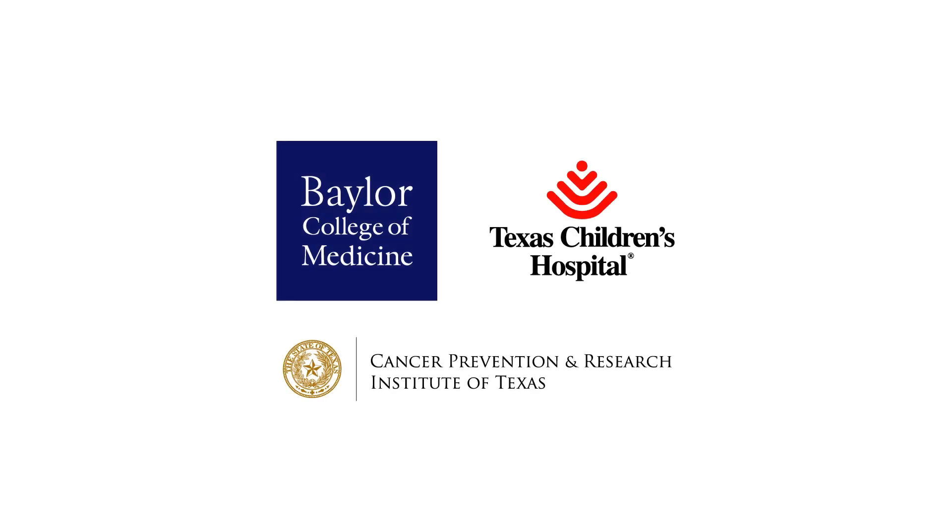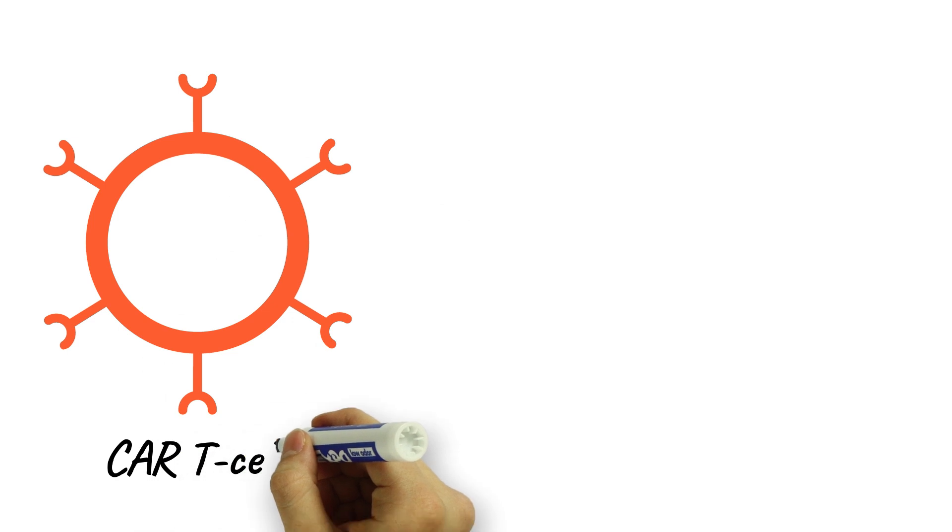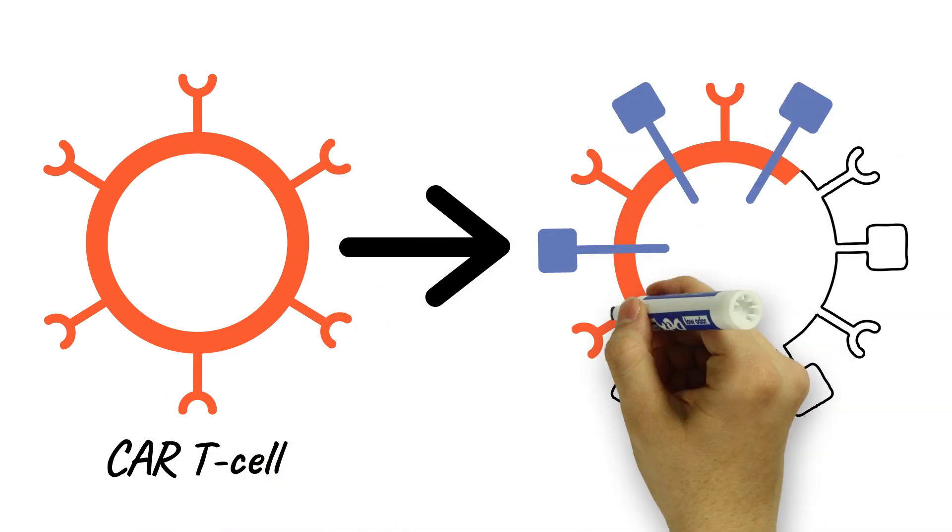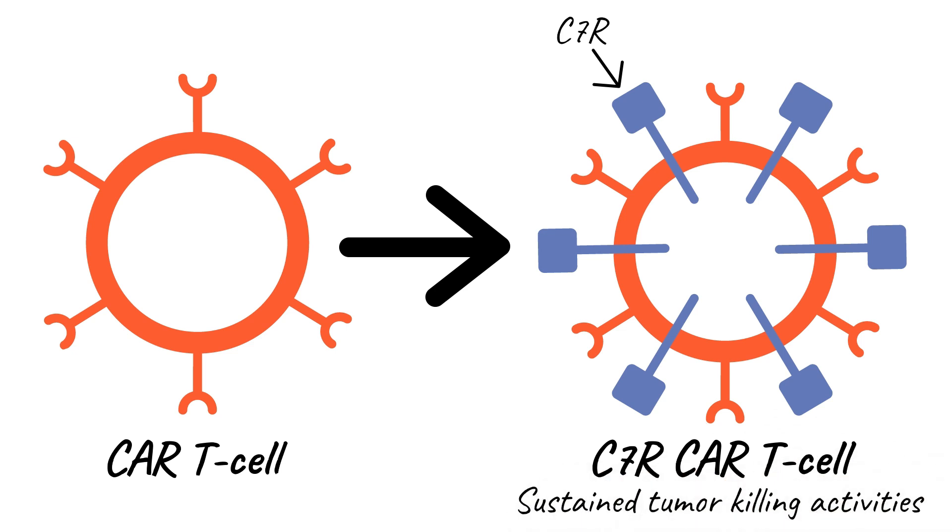Now, researchers at Texas Children's Hospital have created a new molecule called C7R to selectively boost GD2 CAR T-cells with growth factor signaling and give them the endurance they need to fully eradicate neuroblastoma tumor cells.